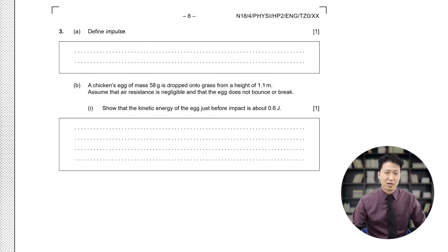and right away it asks you to define impulse. This is not a very difficult problem so we just have to either mention it is a change in momentum or defined as a force multiplied by time. Having passed that, that was only a one point question. The next question is also one point and it asks us to show the kinetic energy of the egg just before impact is about 0.6 joules.